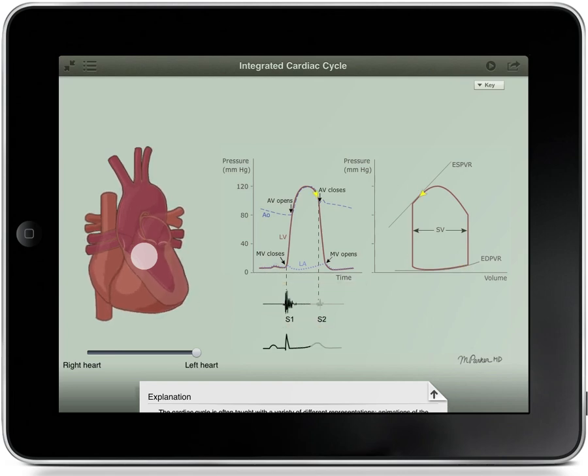Just above the phonocardiogram is a tracing of heart pressures versus time for left ventricle, left atrium, and aorta. Drag your finger along the time axis to correlate the pressure changes with the contraction and relaxation of the heart.